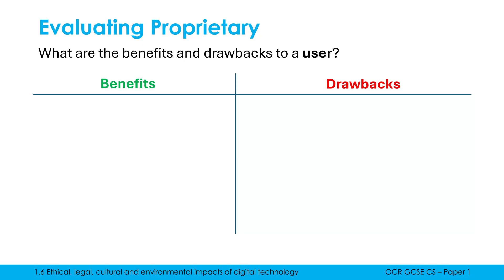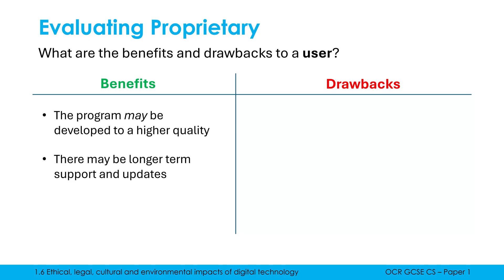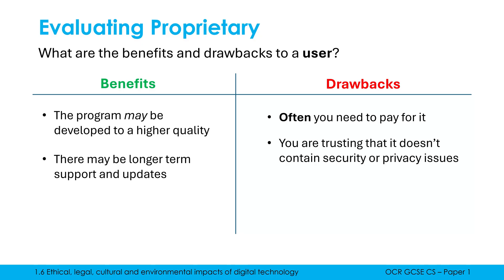Evaluating from the perspective of a user, a user using proprietary software may find the program is higher quality than an open source equivalent, perhaps because a company is investing in it rather than just a few hobbyists. Especially if you're paying for it or it's a big company, there's often longer-term support — documentation, articles, and customer service. There may also be updates in the future. However, often you've got to pay for it, or if you're not, there's usually some way they're making money such as through advertisements. You are ultimately trusting it doesn't contain any issues, and because it's off-the-shelf software, there's no option to modify or customise it — you get what you're paying for, and that's it.